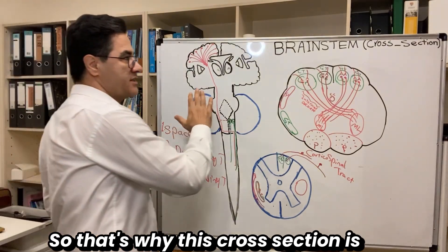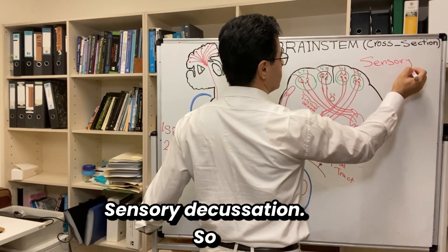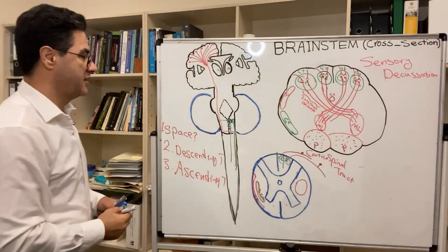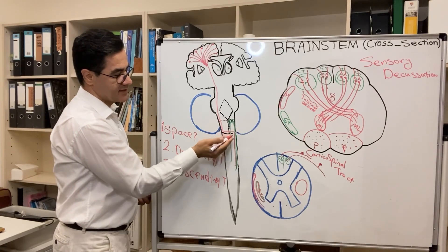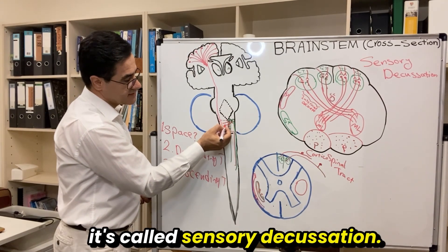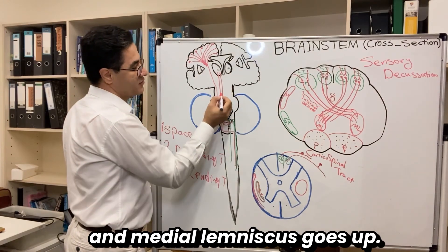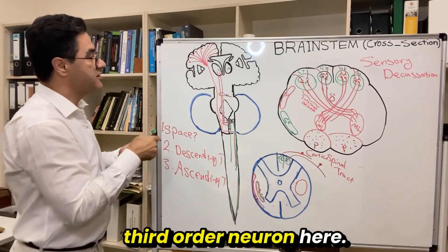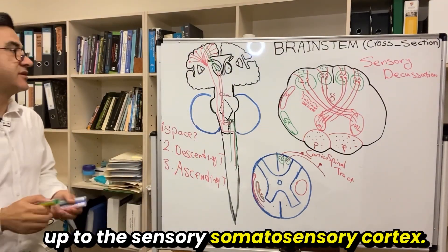That's why this cross-section is known as the sensory decussation. In the previous video we had a motor decussation, where the corticospinal tract fibers decussate at the level of the caudal part of the medulla oblongata. Now we have another decussation — the sensory decussation. The second-order neuron axon makes the medial lemniscus, which goes up to the thalamus and synapses onto the third-order neuron, which then goes up to the somatosensory cortex.